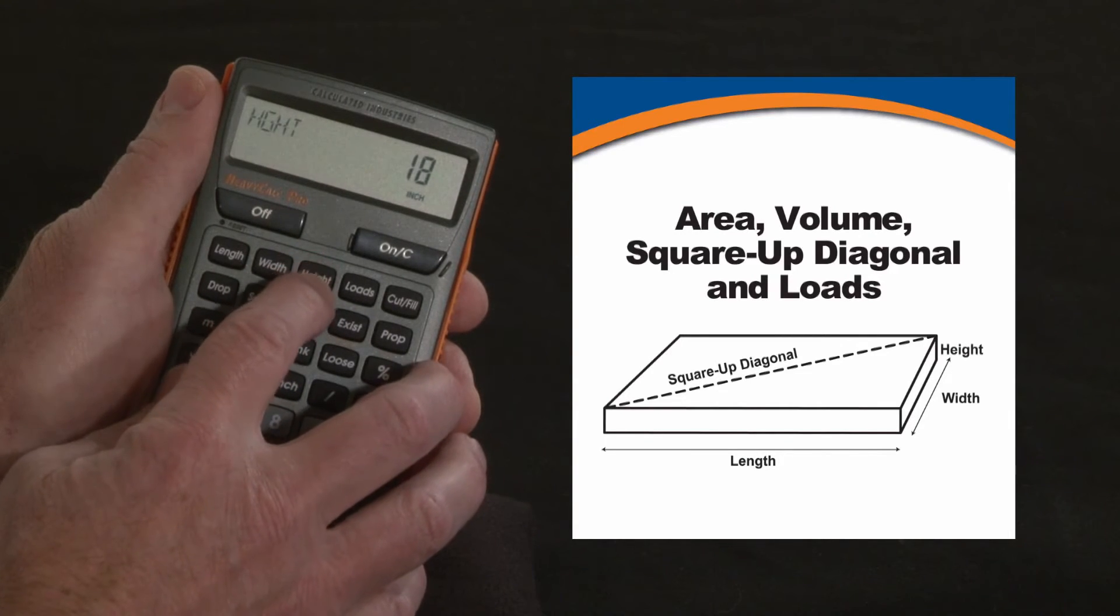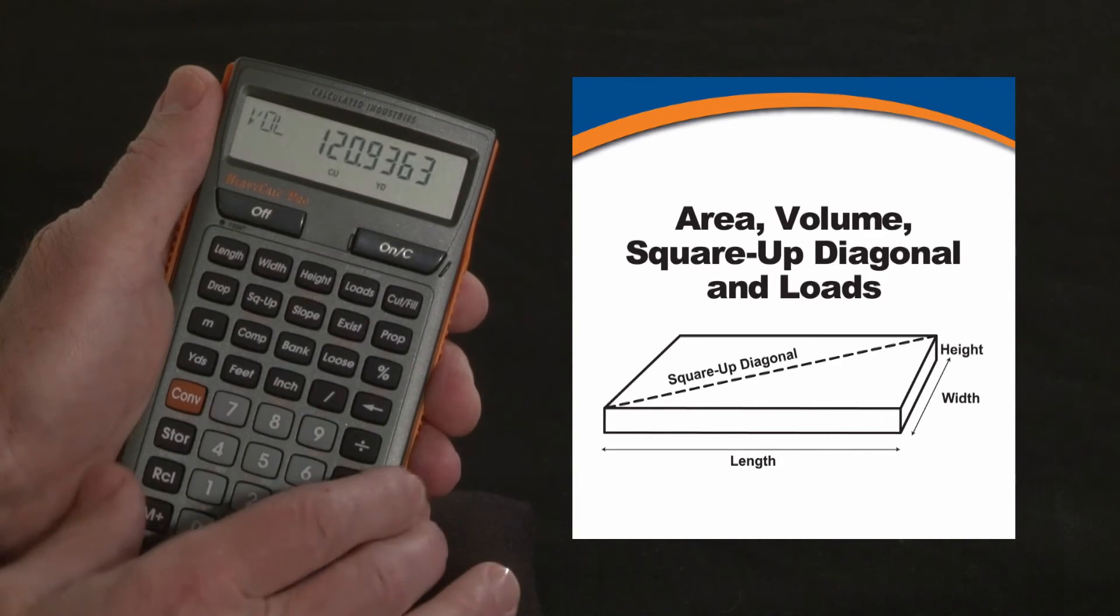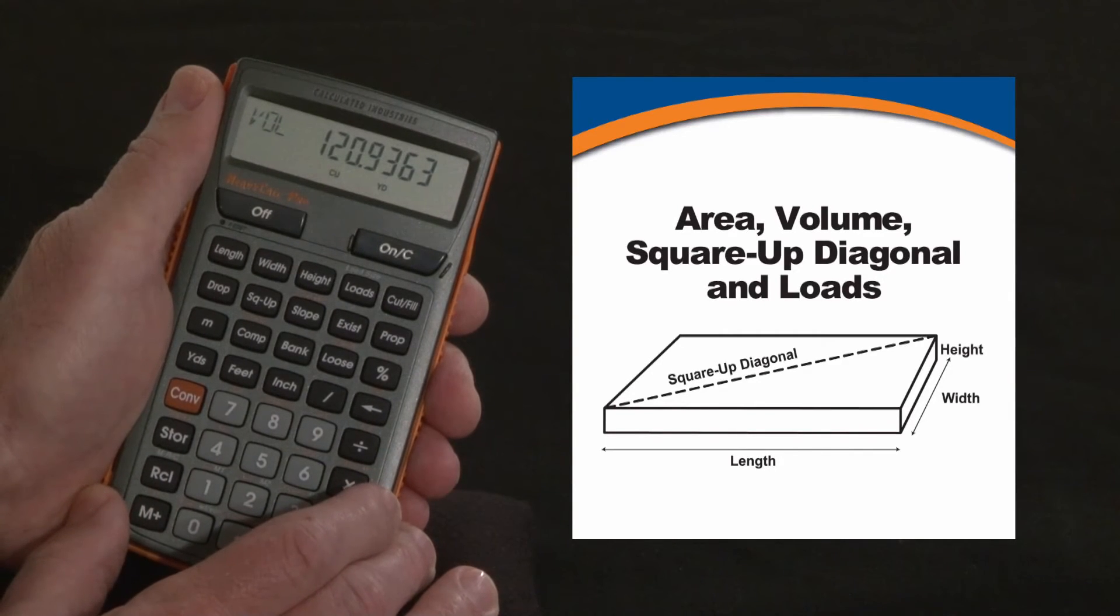Back to the height key here. Confirms that 18 inches of depth. Press it again. There's our cubic volume. We need 120.9 cubic yards.